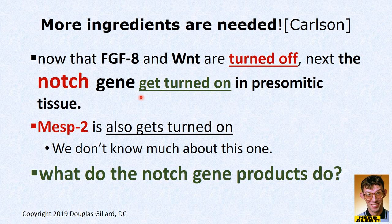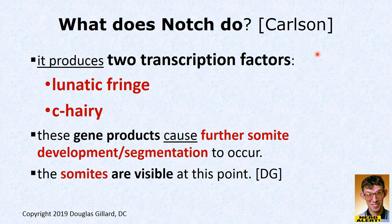Now that FGF8 and WNT are turned off, we need to turn on the notch gene in the presomitic tissue. The notch gene is turned on in the tissue that's going to become a somite. The notch gene product then turns on two more genes: lunatic fringe and the c-hairy gene. These are both powerful transcription factors, and lunatic fringe and c-hairy transform that tissue into a somite — causing further development. At this point the somite becomes visible, though it's still not mature.